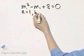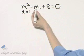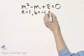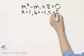b is the coefficient of, in this case, m, so b is negative 1, and c is the constant, in this case, 8.